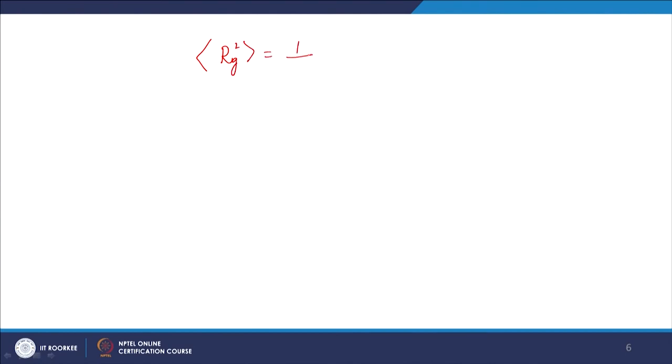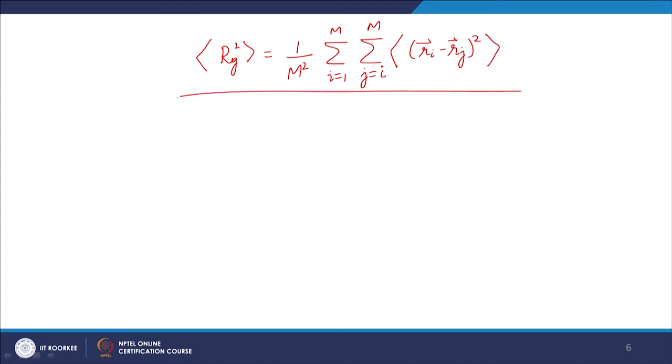In the next lecture I will show how we can do a discrete-to-continuous transformation and find a relation between the radius of gyration and the end-to-end displacement for an ideal chain — it turns out that both are proportional to each other. Before that, I will end this lecture with a small detail about how Rg is experimentally measured.